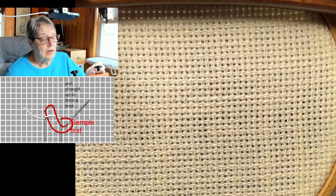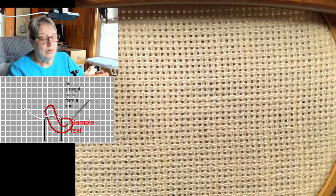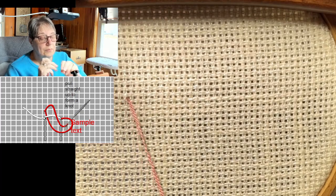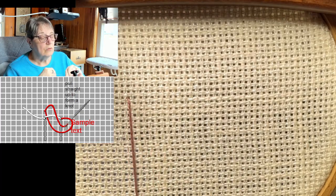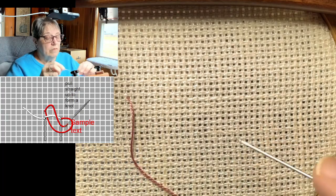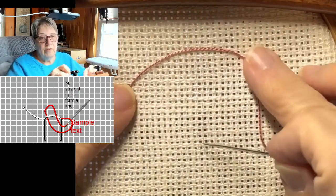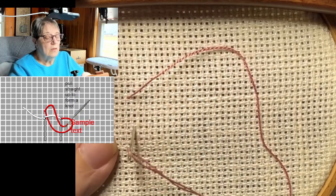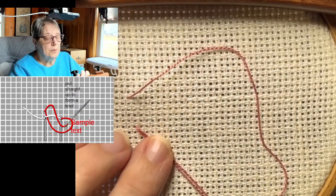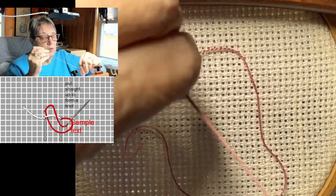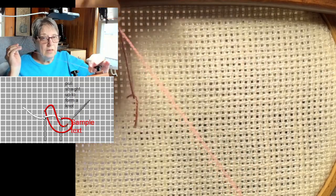But, what we're going to do is have our away thread, and we're going to start this just like we would a regular buttonhole stitch. So, a regular buttonhole stitch, we're going to have our little loop up here. We're going to go down through the fabric. We're going to come up through the fabric. We're going to pull that like we just would any other buttonhole stitch.